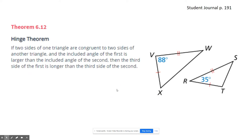The Hinge Theorem says: if two sides of one triangle are congruent to two sides of another triangle, then if the included angle of the first is larger than the included angle of the second, the third side of the first is longer than the third side of the second. So basically in this picture, these two segments are congruent, and since angle V is greater than angle R, the length of WX is also greater than the length of ST.